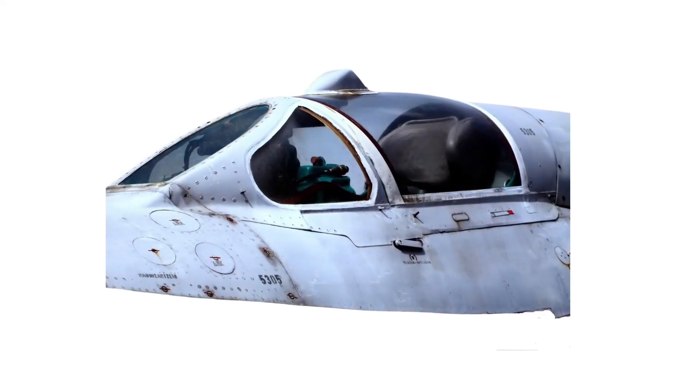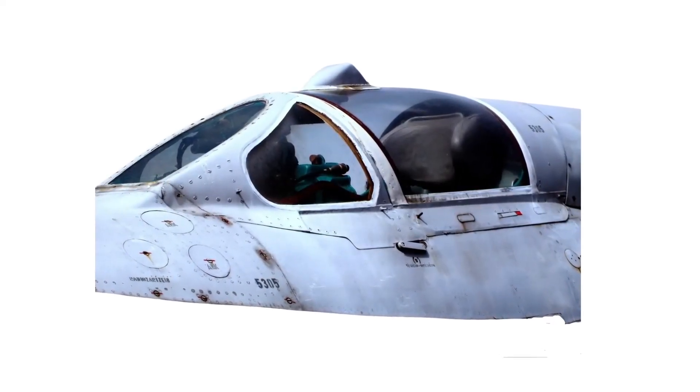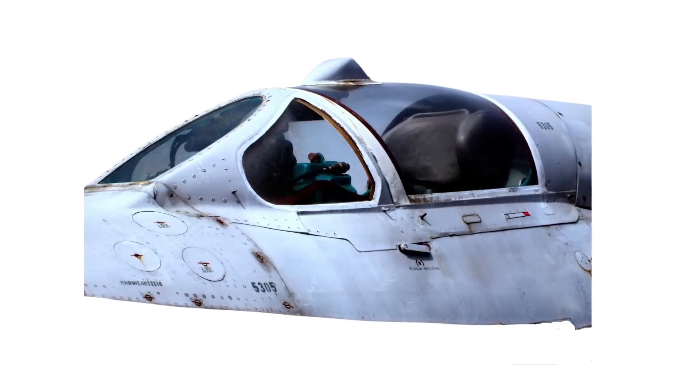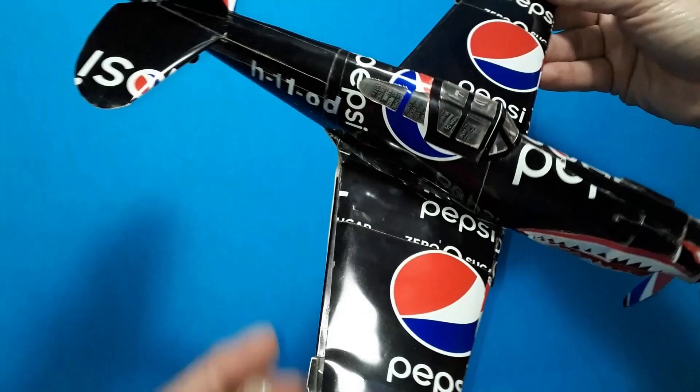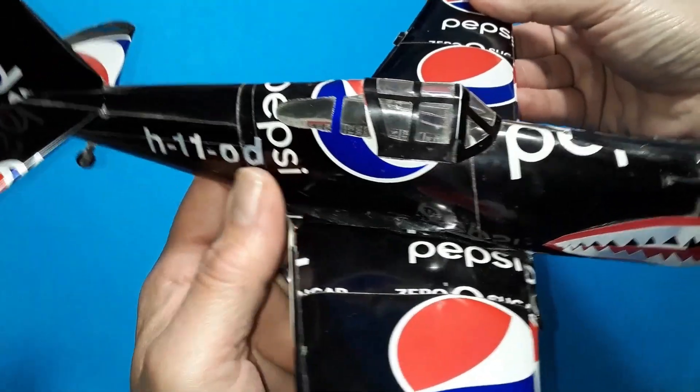Another critical component of a good soda can airplane is a decent looking canopy. While some make these out of dish soap containers or plastic soda bottles, we think we found a better way.